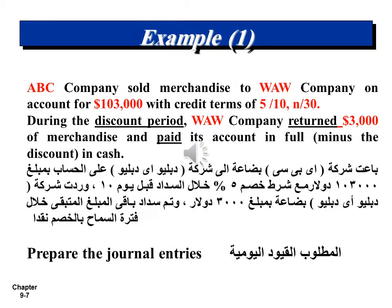Example 1: ABC Company sold merchandise to WAW Company on account for $103,000 with credit terms of 5/10, net 30. During the discount period, WAW Company returned $3,000 of merchandise and paid its account in full minus the discount in cash. Required: prepare the journal entries.